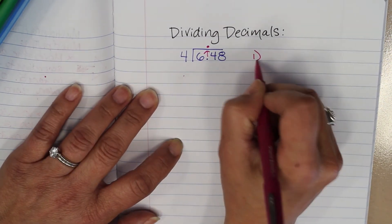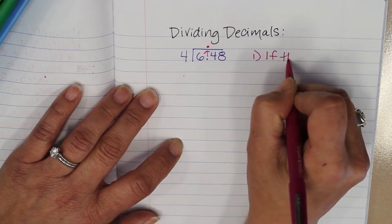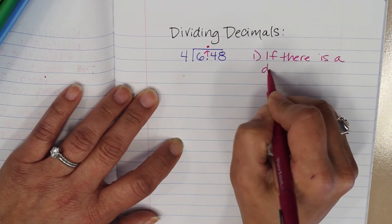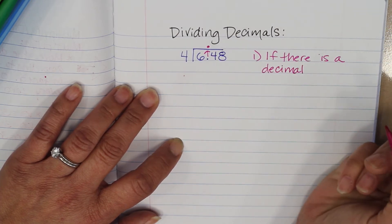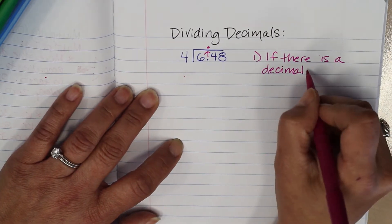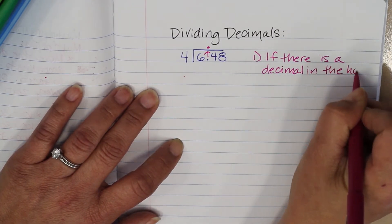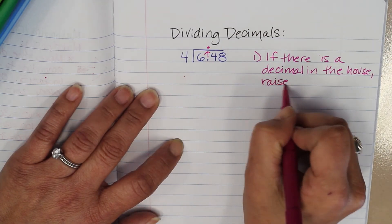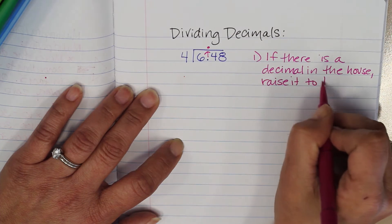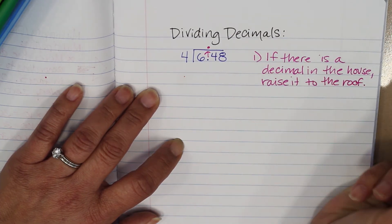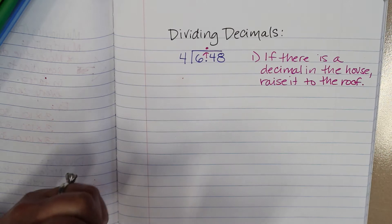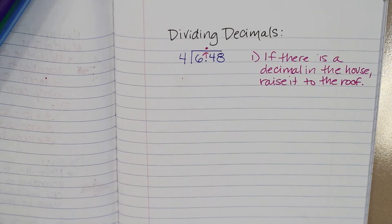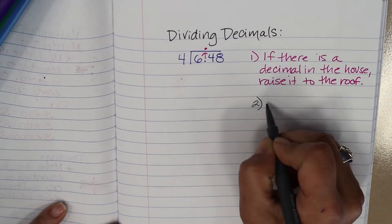My first rule is: if there is a decimal in the house, raise it to the roof. That's just an easy way to remember it. The second thing I need to do is just divide it normally.